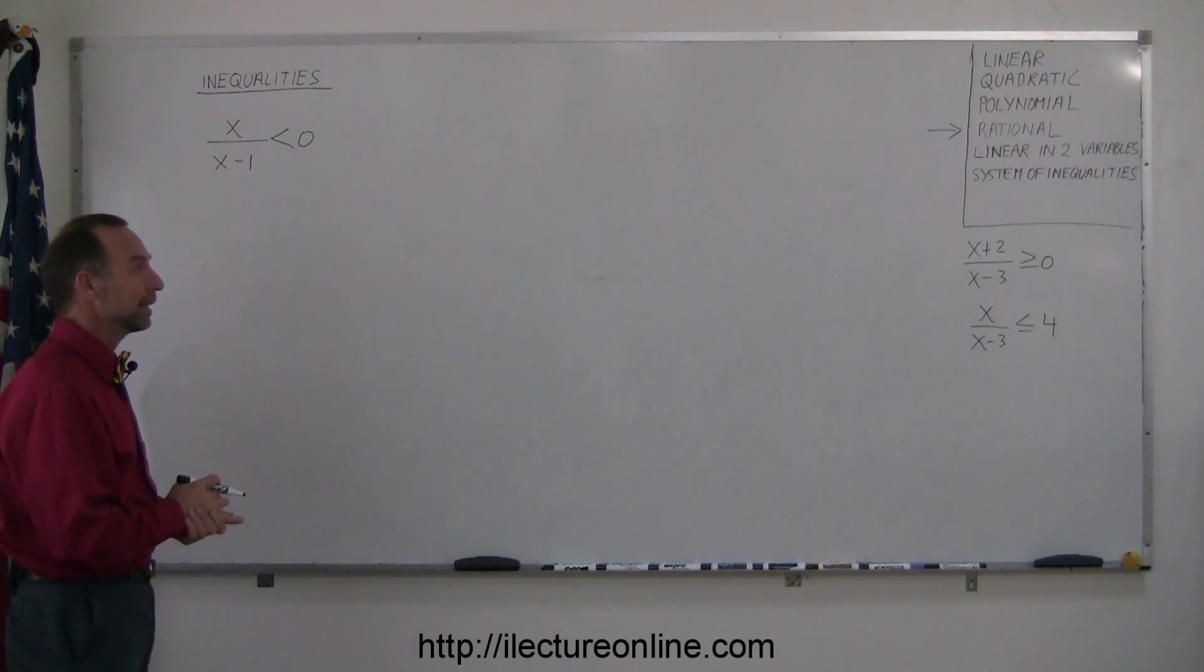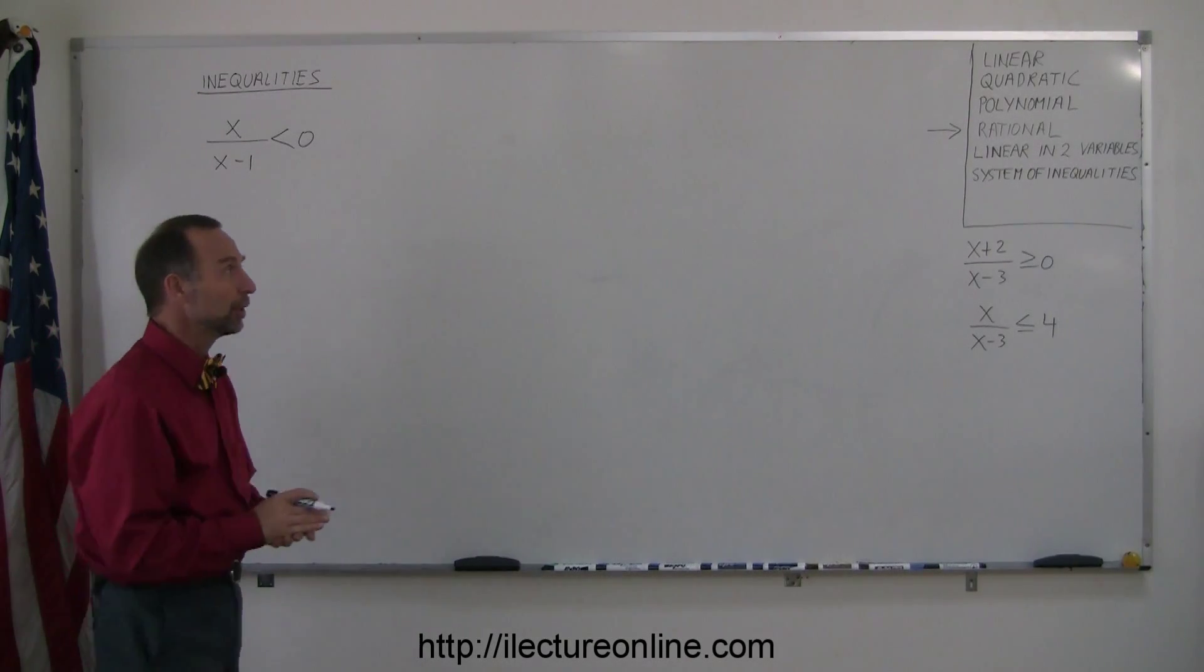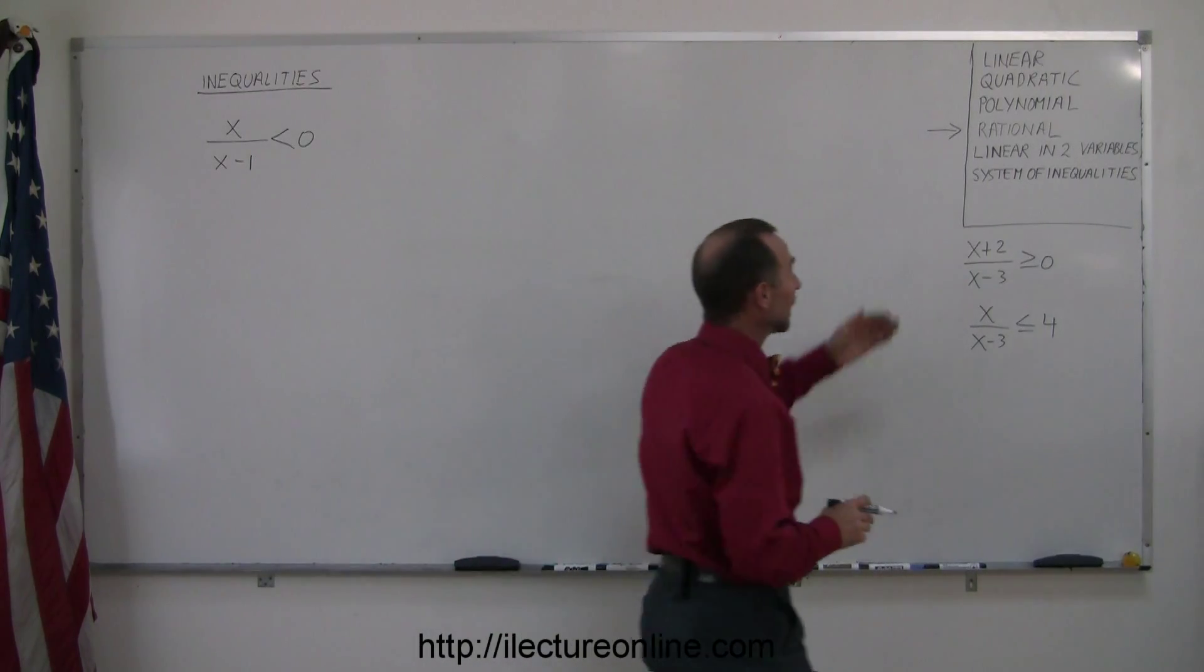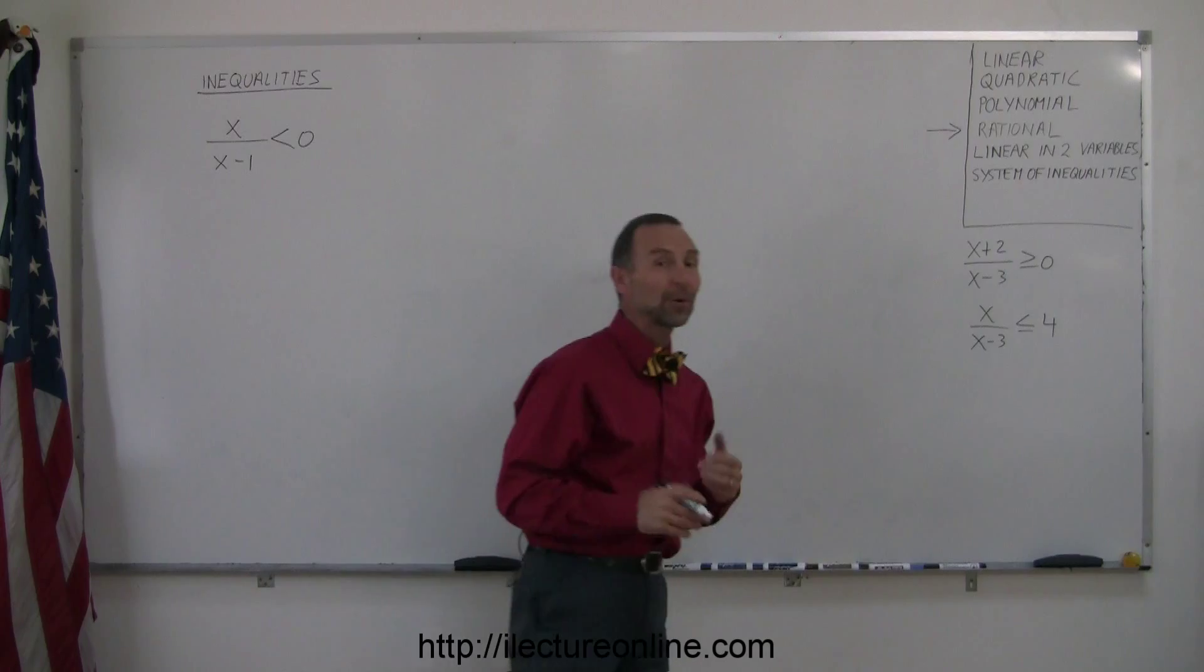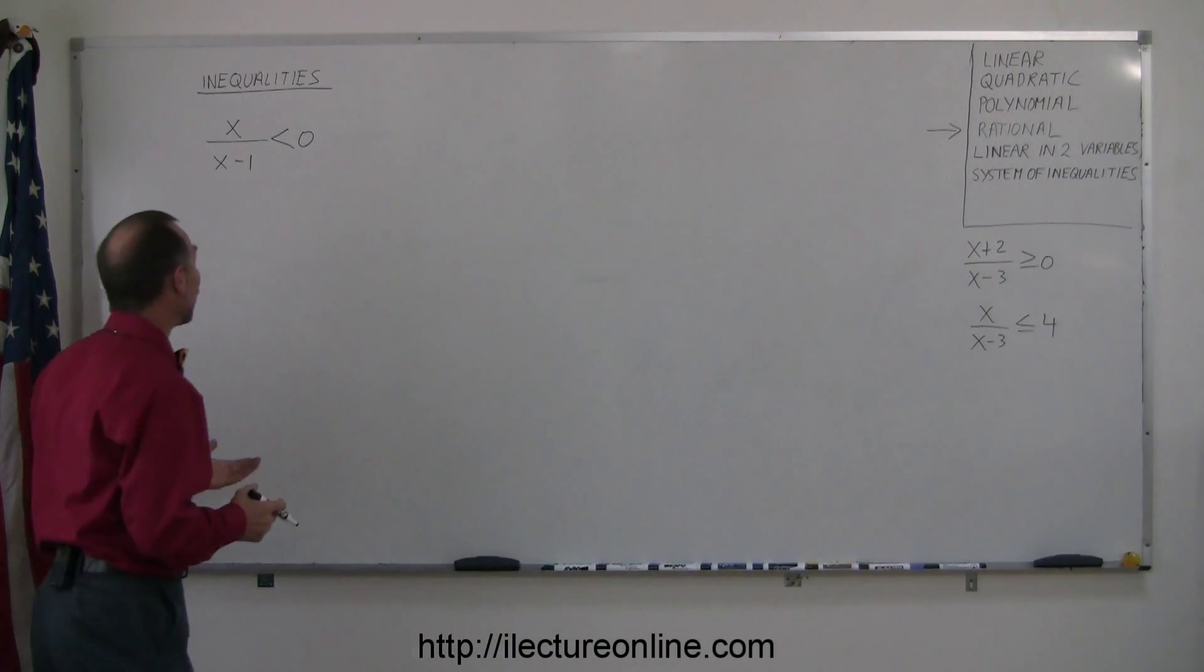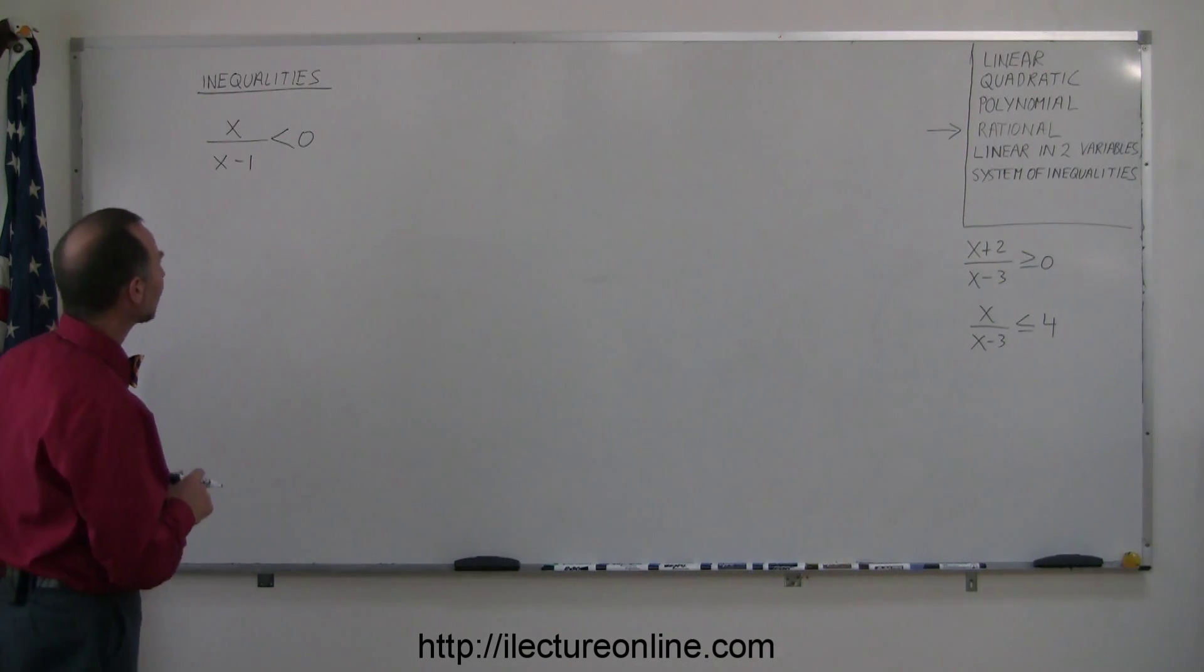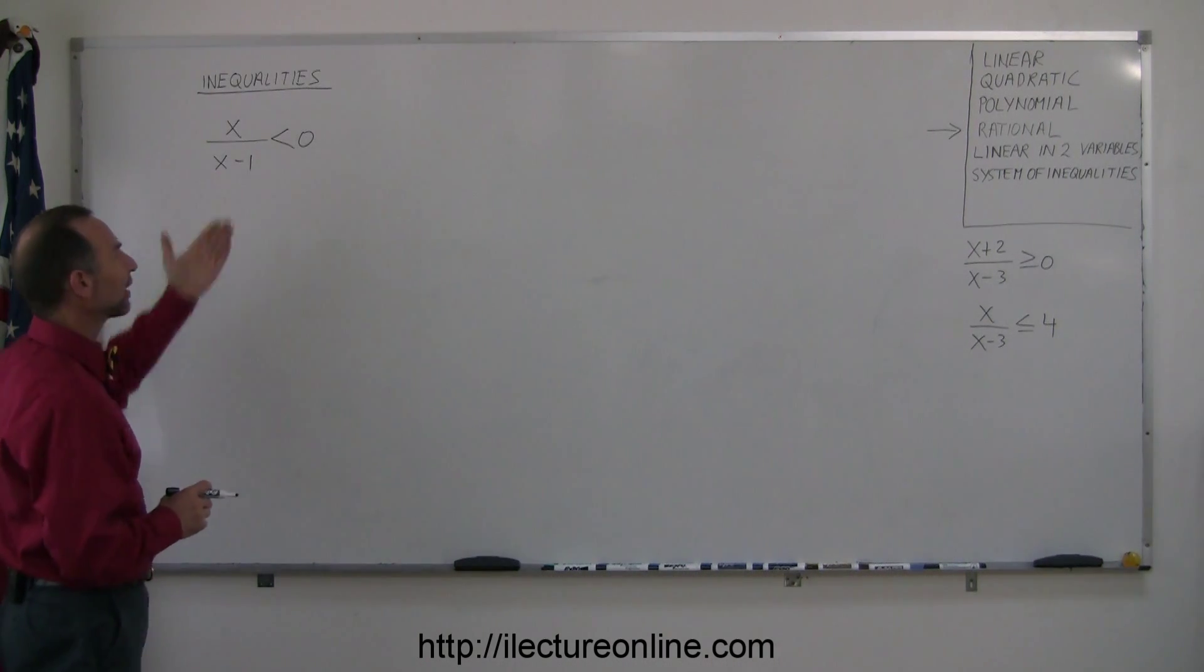Here's a different type of inequality that is not as straightforward as what you're used to doing. It's called a rational inequality, and rational simply means that there's a fraction involved, like x over x minus 1. So how do you find all the values for x that satisfy that inequality?